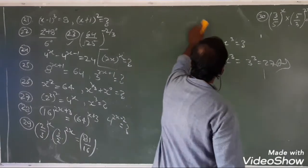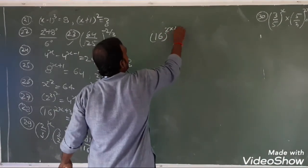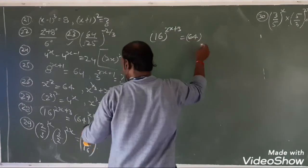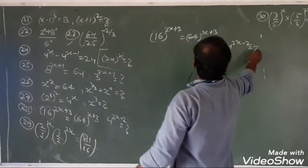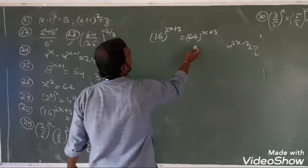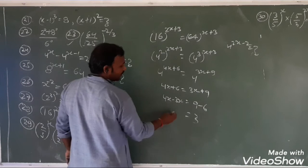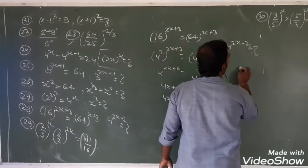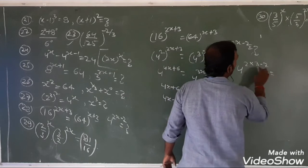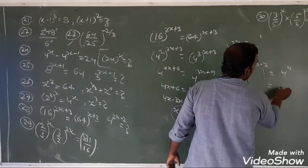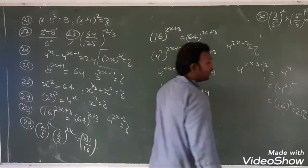Question 28: 16^(2x+3) = 64^(x+3). Find 4^(2x-2). Converting all to base 2: 16 = 2^4, 64 = 2^6. So 2^(4(2x+3)) = 2^(6(x+3)): 8x+12 = 6x+18, so 2x = 6, x = 3. Now 4^(2x-2) = 4^(2×3-2) = 4^4 = 256.